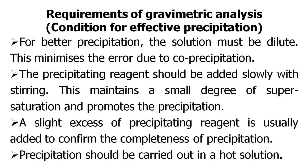Based on this work, Richards became the first American to receive the Nobel Prize in Chemistry in 1914. Now let us discuss the requirements of gravimetric analysis, or the effective conditions for precipitation. For better precipitation, the solution must be dilute, which minimizes the error due to co-precipitation. The precipitating reagent should be added slowly with constant stirring, which maintains a small degree of supersaturation and promotes precipitation. A slight excess of precipitating agent is usually added to confirm the completeness of precipitation.